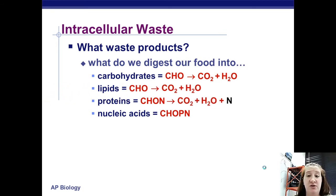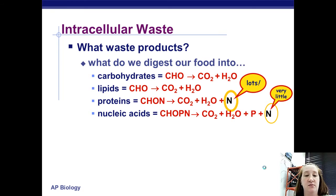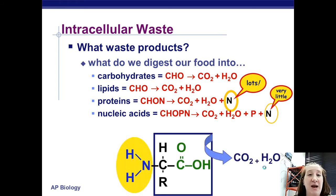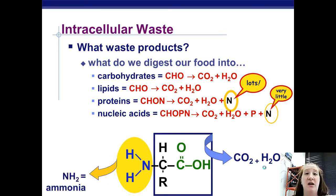Proteins have nitrogen in them. Nucleic acids have nitrogen in them. How do we get rid of that nitrogen? The carbon and hydrogen can go out as CO2 and water, but the actual NH2 group — you've got to find some way of dealing with it. NH2 is ammonia and it is toxic to your body. It cannot stay in your body; if it does, it will kill you. You've got to find some way of getting it out quickly.